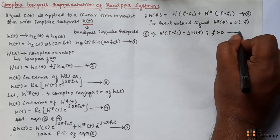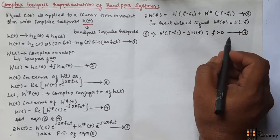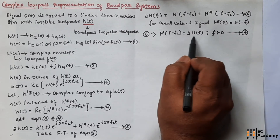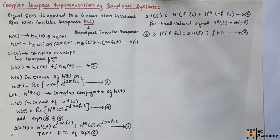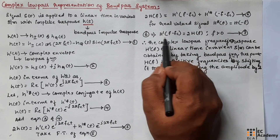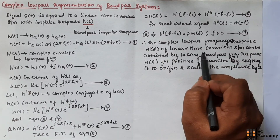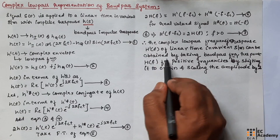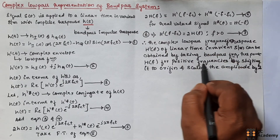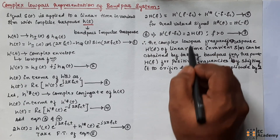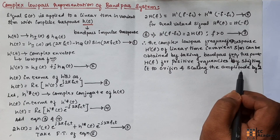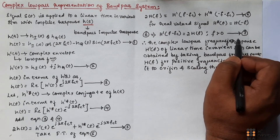We can write from equation number 6 that H̃(f − fc) = 2H(f) for frequencies greater than 0. Let us call this equation number 7. This is the expression for positive frequencies of the signal. Therefore, the complex low pass frequency response H̃(f) of a linear time invariant system can be obtained by taking the band pass frequency response H(f) for positive frequencies, shifting it to the origin, and scaling the amplitude by 2.